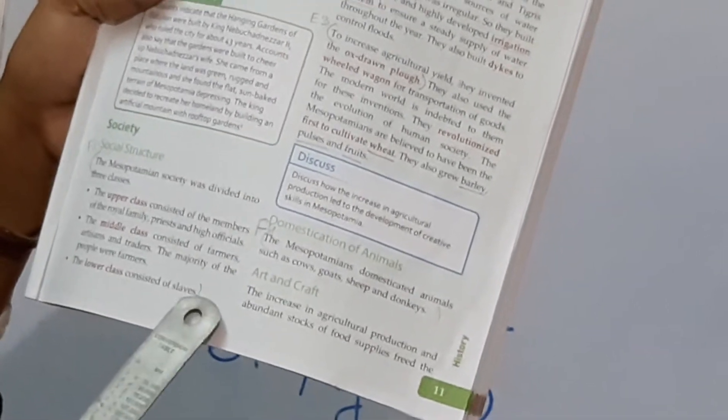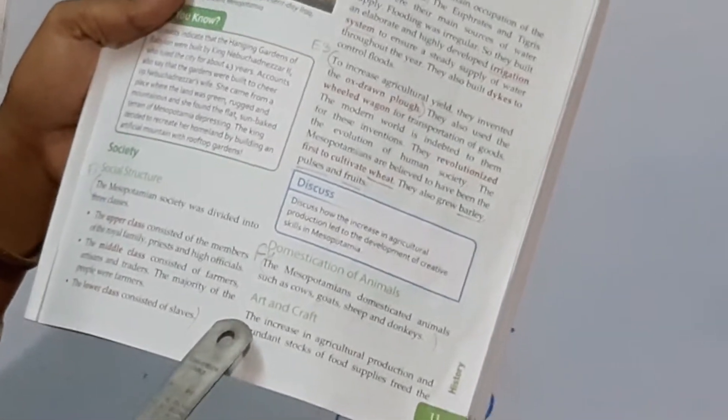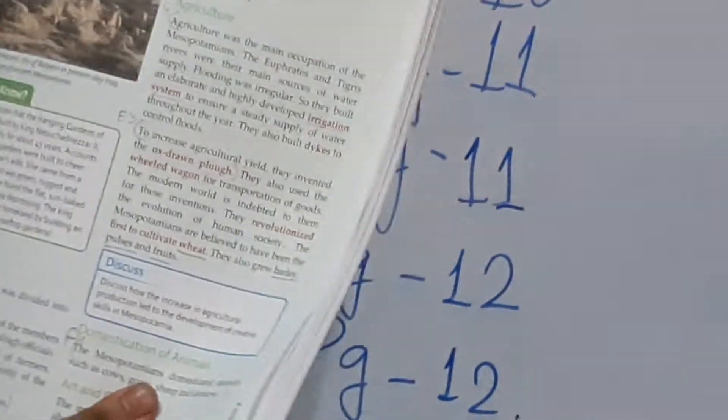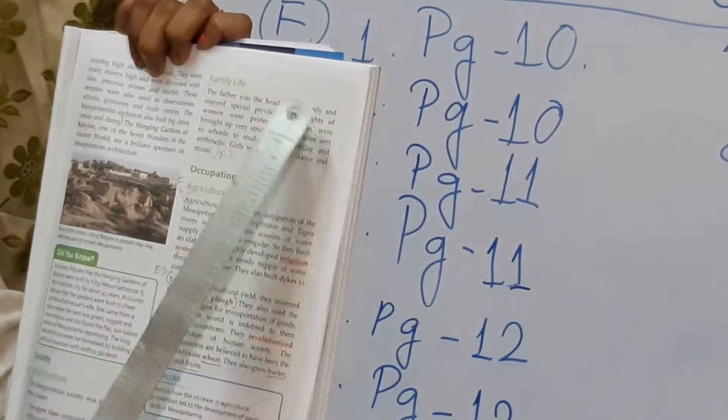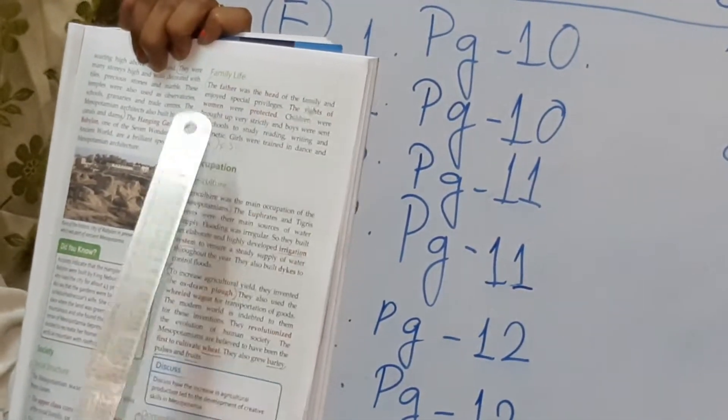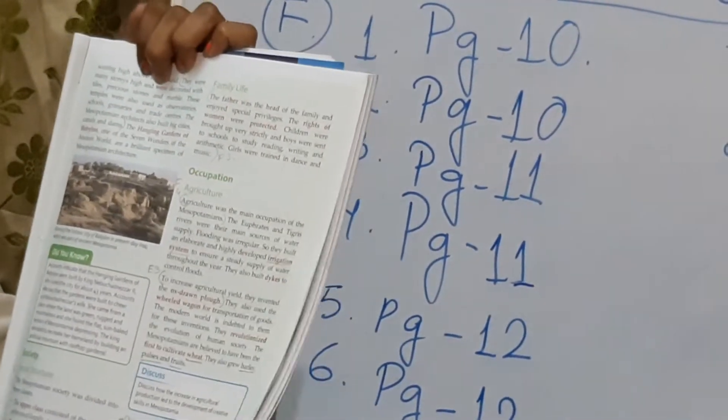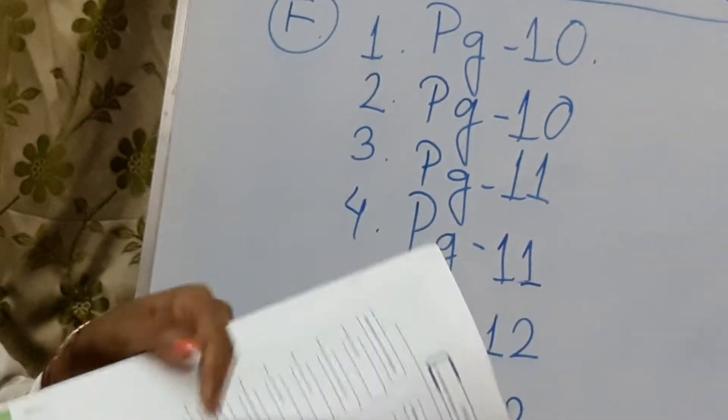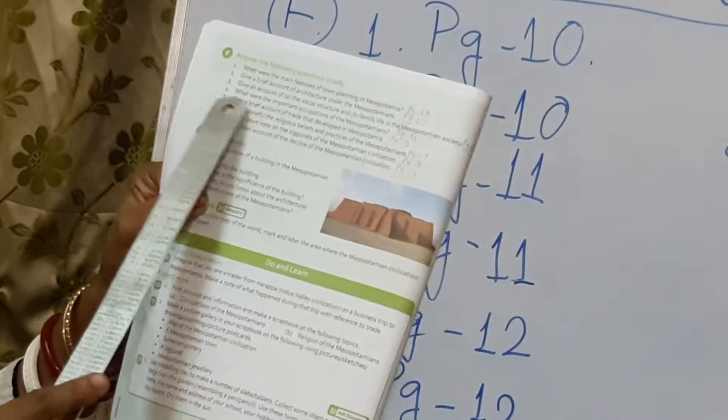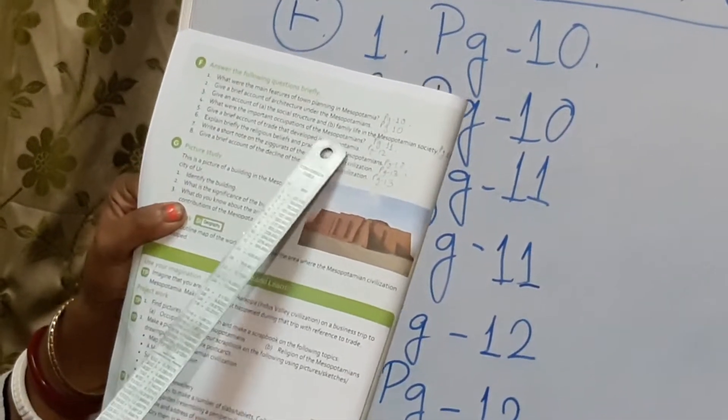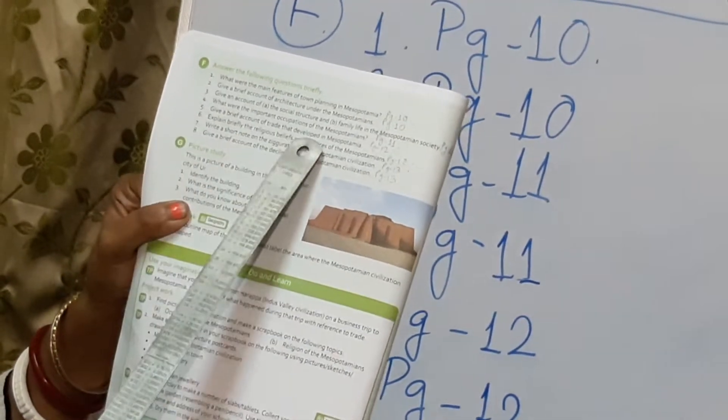Social structure. Next is the family. About family also you have to write from first to last. The father, under the heading family life - the father was the head of the family starting from here till girls were trained in dance and music. Now turn to the question page again, page number 16, and question number 4. What were the important occupations of the Mesopotamians? You know what were the main occupations? Agriculture.